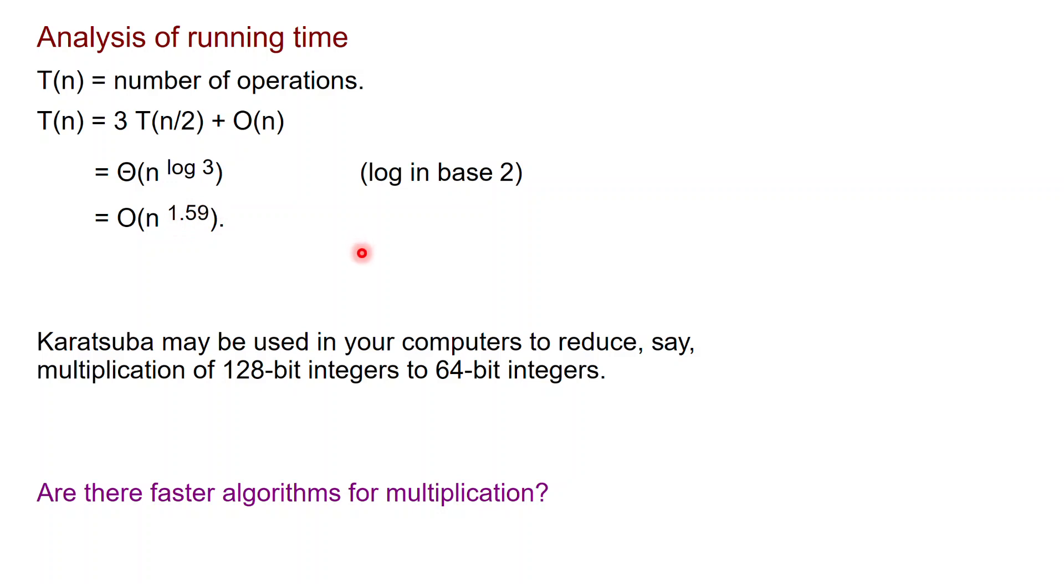Now it's not extremely common that you have to multiply two very, very long numbers, although there are applications which need it. But not the full-blown recursive algorithm, but the basic idea in Karatsuba of saving one multiplication when multiplying two-digit numbers is extremely widely used. So for example, in your computers it may be used to reduce the multiplication of 128-bit integers to 64-bit integers.